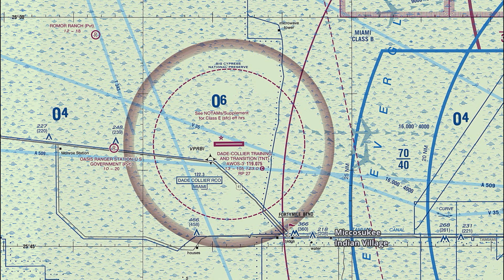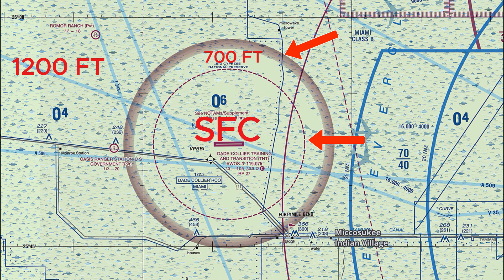To summarize what we've covered so far: anywhere else apart from a shaded or dashed magenta, you're going to have your domestic en route, which starts at 1,200 feet. As you go into a transition area, class echo airspace will start at 700 feet, and eventually when you enter a surface area or the dashed magenta, as the name implies, it starts directly from the surface all the way up to but not including 18,000 feet.